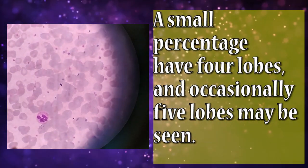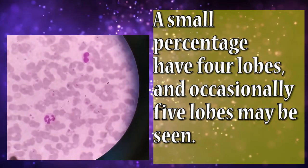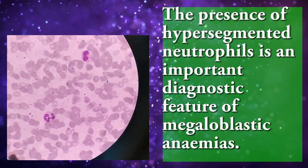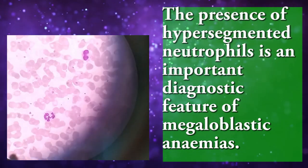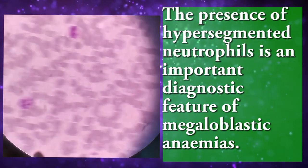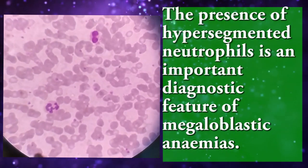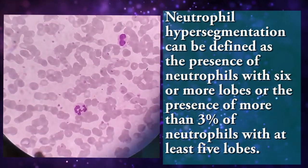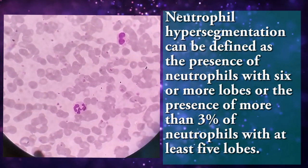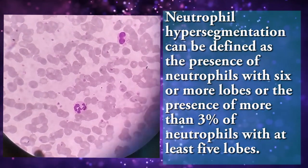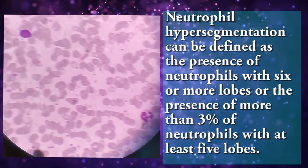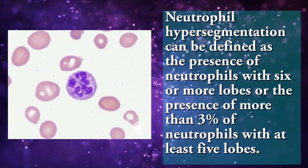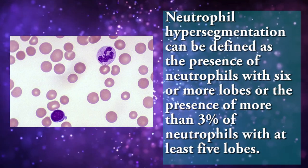A small percentage of neutrophils have four loops, and occasionally five loops may be seen. What is a hypersegmented neutrophil? The presence of hypersegmented neutrophils is an important diagnostic feature of megaloblastic anemia. Neutrophil hypersegmentation can be defined as the presence of neutrophils with six or more loops, or the presence of more than 3% of neutrophils with at least four loops.